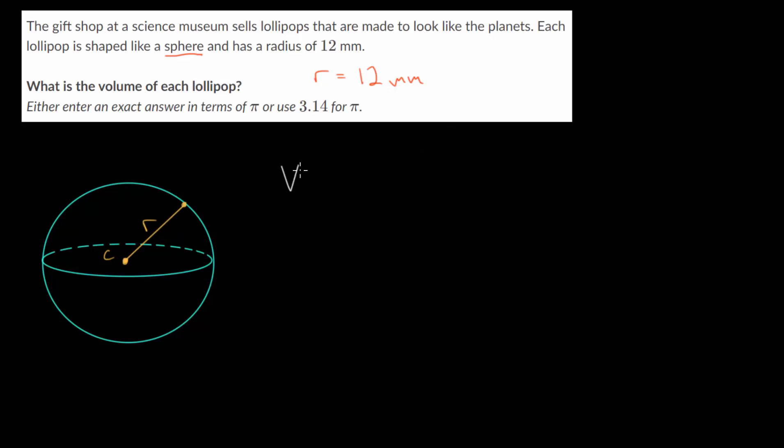And we know that the volume of a sphere is four-thirds multiplied by pi multiplied by the radius of that sphere to the third power. So with these examples, when you have a sphere, if you know the radius, you can just plug that in to figure out what the volume is equal to.